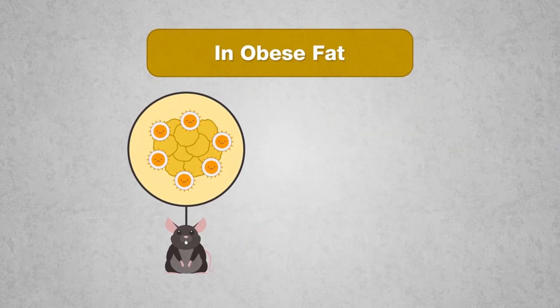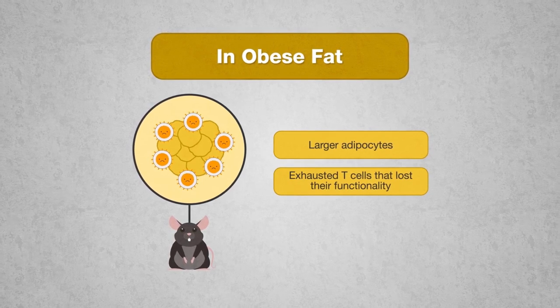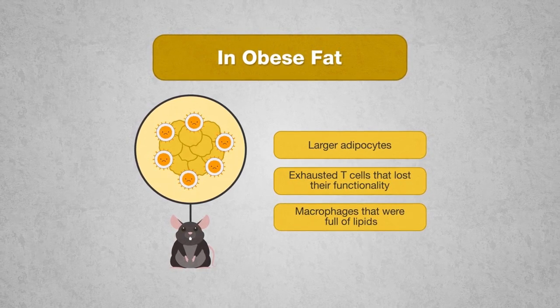In obese fat, we found larger adipocytes, exhausted T cells that lost their functionality, macrophages that were full of lipids, and a high risk of diabetes.